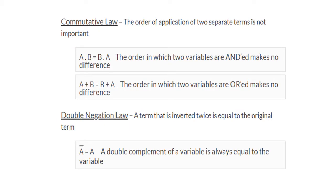Commutative law states that in whichever order you perform an AND operation, the result will be the same. That is, a AND b is equal to b AND a. Same is the case with OR: a OR b is equivalent to b OR a. The order of execution of AND and OR operations will result in the same result.